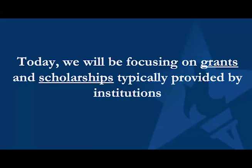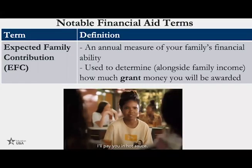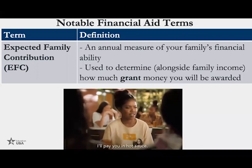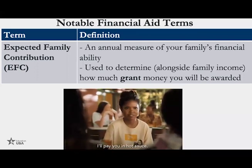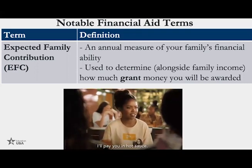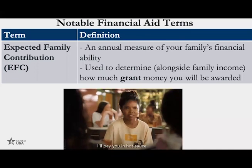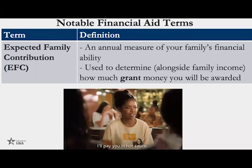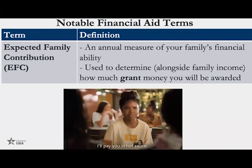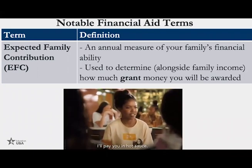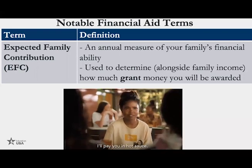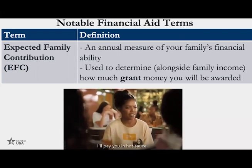Today we're going to focus on grants and scholarships provided by institutions — not by the government or private organizations — because these are the ones you should be targeting. The majority of your financial aid applications should target these. The first important term is Expected Family Contribution (EFC): it's an annual measure of your family's financial ability, used to determine how much grant money you'll be awarded.